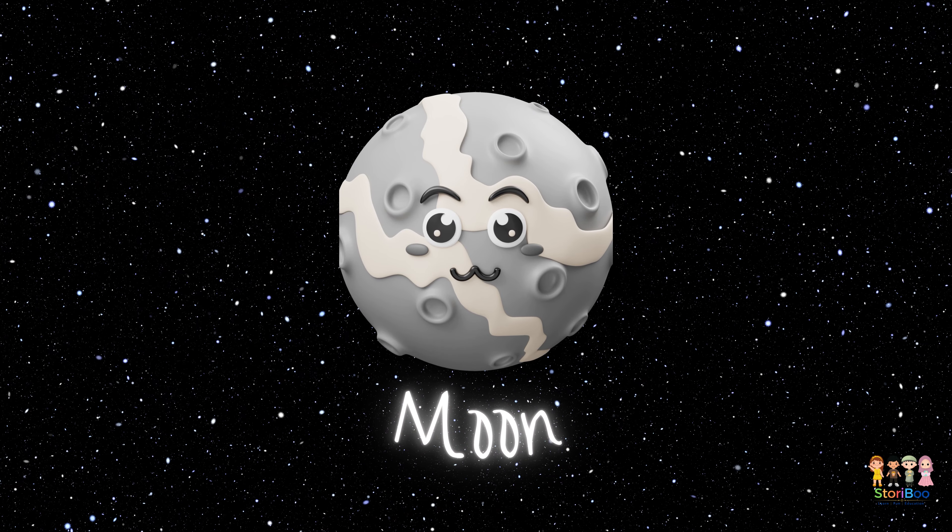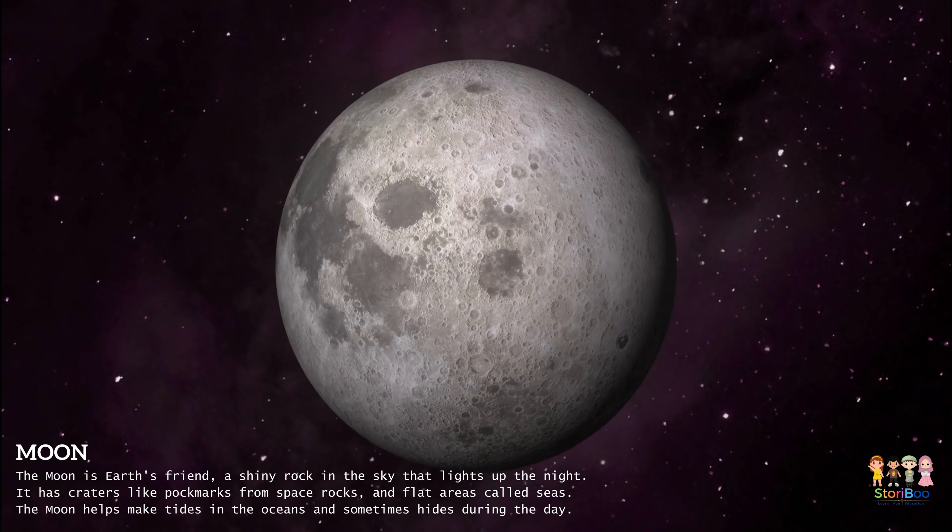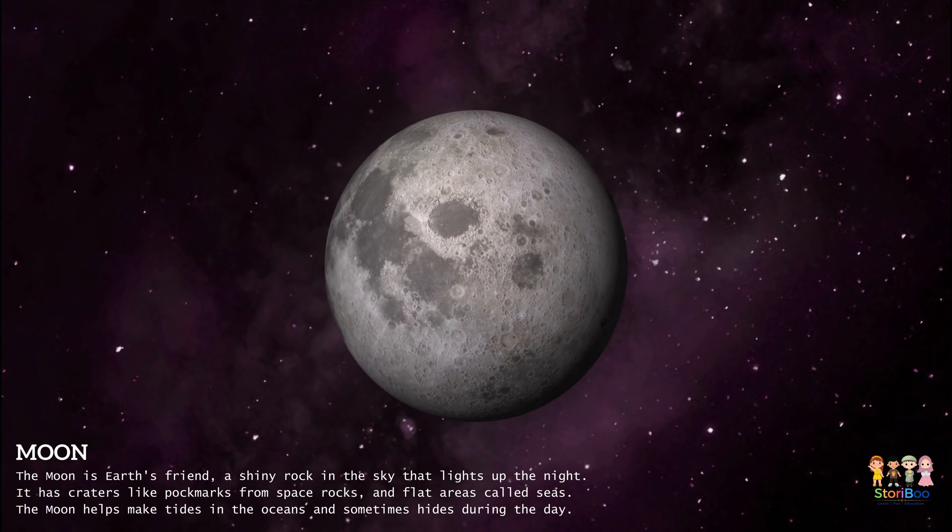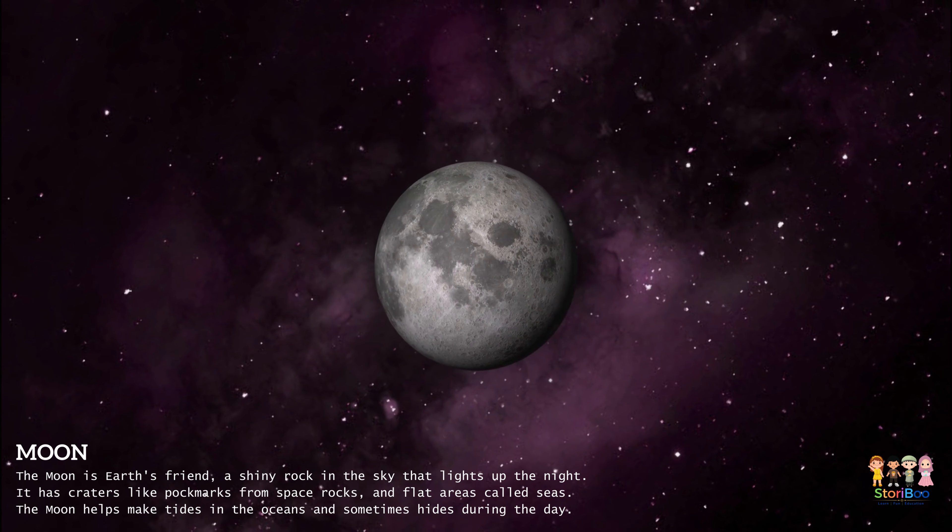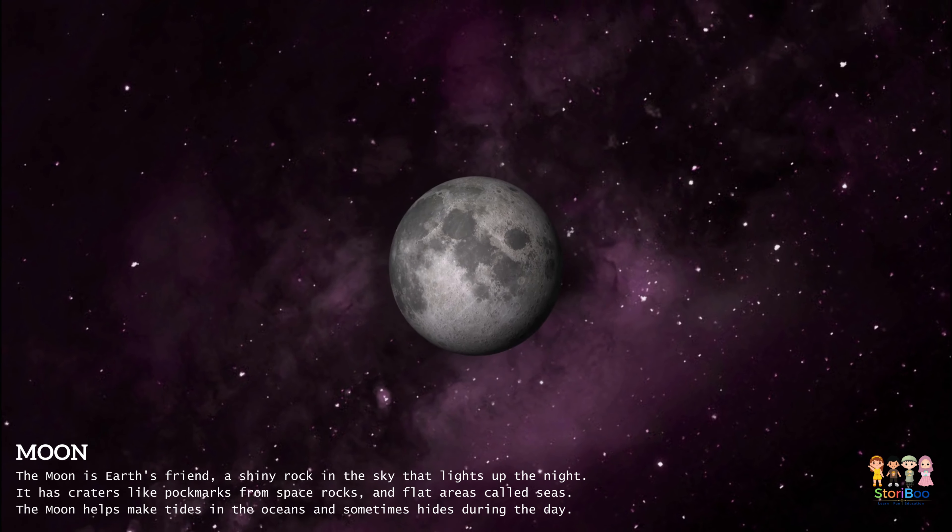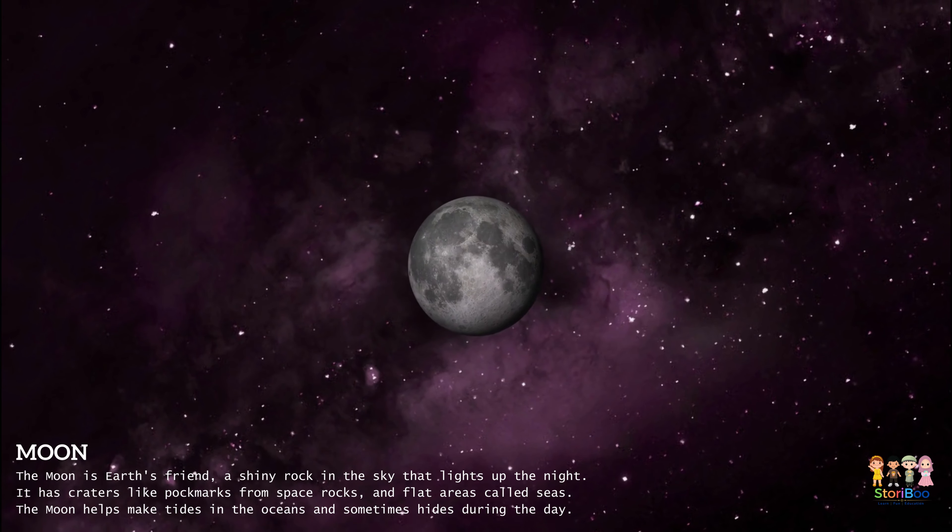The moon is Earth's friend, a shiny rock in the sky that lights up the night. It has craters like pockmarks from space rocks and flat areas called seas. The moon helps make tides in the oceans and sometimes hides during the day. Our moon's name is Luna in Latin.